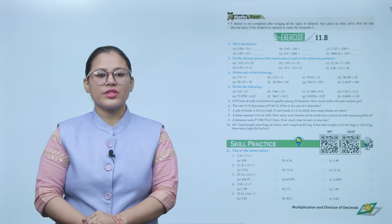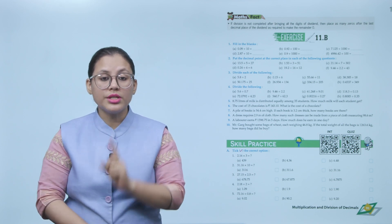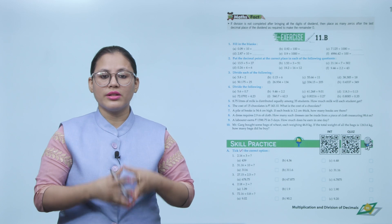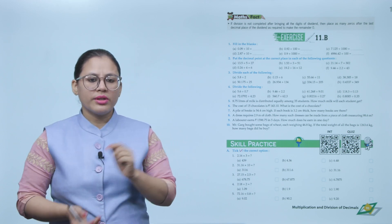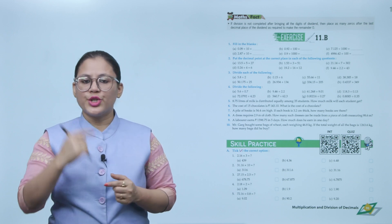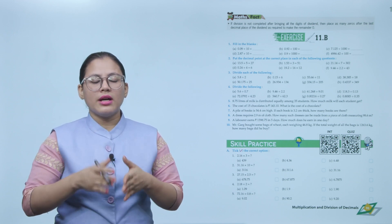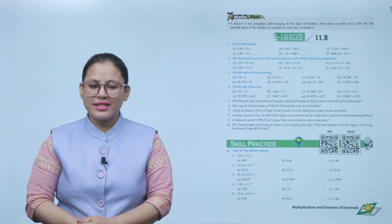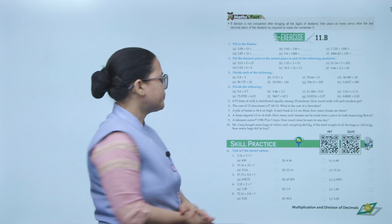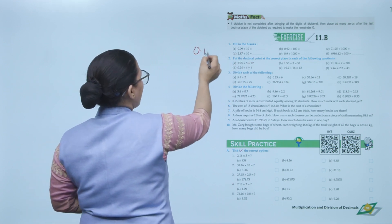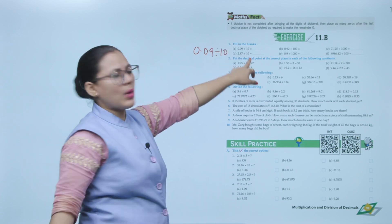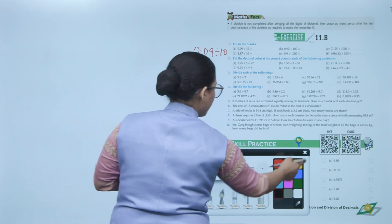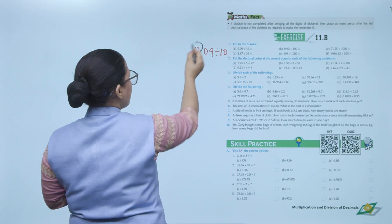Math fact: if the division is not completed after bringing all the digits of the dividend, place as many zeros after the last decimal place of the dividend as required to make the remainder zero. So if your division isn't complete and you've used all digits, you can add zeros after the dividend until the remainder becomes zero.